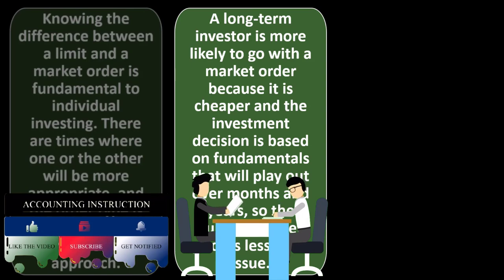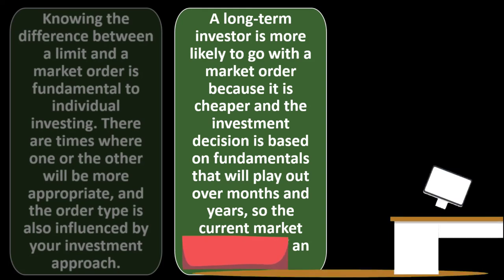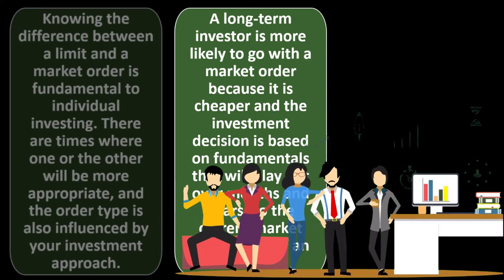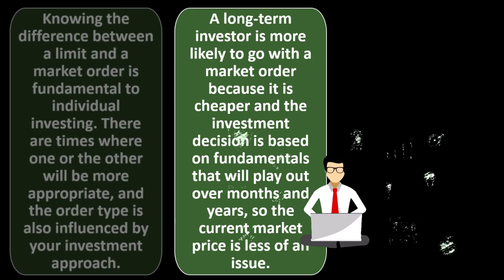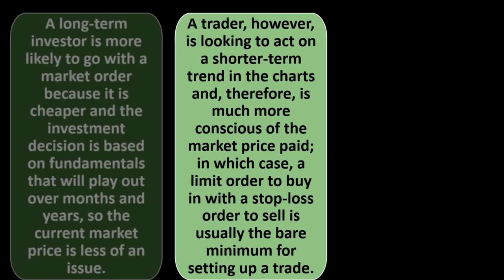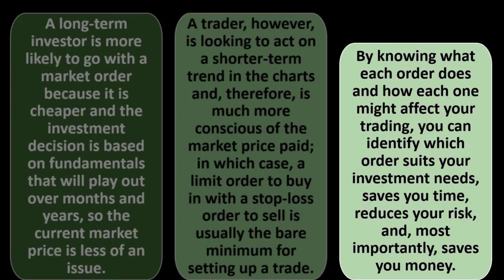Long-term investors typically use market orders when buying individual stocks, or may use mutual funds, index funds, and ETFs. If you're trading more in the short term and trying to capture short-term gains, you'll likely use more specialized order types. A trader acting on short-term trends is much more conscious of the market price paid, and will typically use a limit order to buy along with a stop loss order to sell. By knowing what each order does, you can identify which suits your needs — saving time, reducing risk, and saving money.